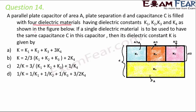If a single dielectric material is to be used to have the same capacitance C in this capacitor, what is its dielectric constant k? The question asks: instead of four different dielectric materials, if we use one single dielectric material such that the net capacitance equals the net capacitance of all four dielectric materials combined, what should the value of that dielectric constant be?